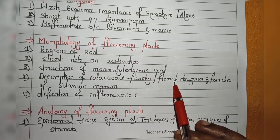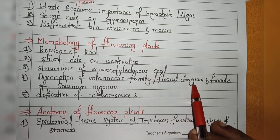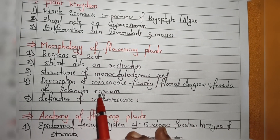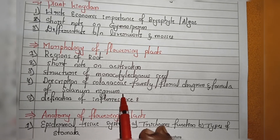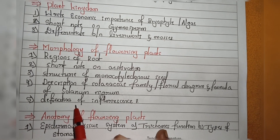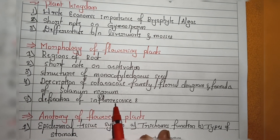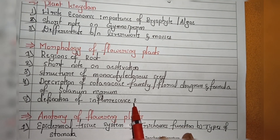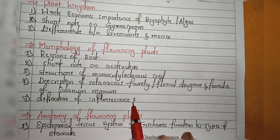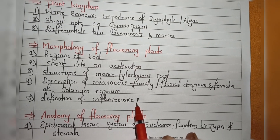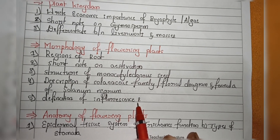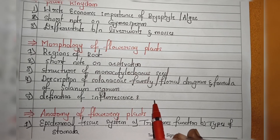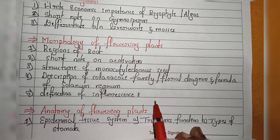They will ask questions based on the floral diagram and floral formula of Solanum nigrum. Next, they will ask the definition of inflorescence. If the question is for two marks, you have to write the definition of inflorescence and give one or two examples.